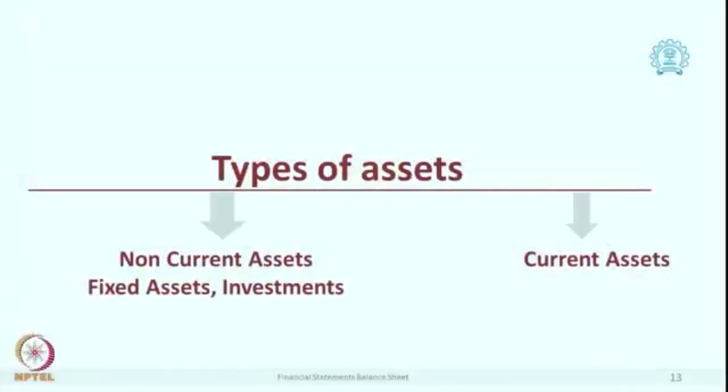Assets would not usually be made available to the company for free, so there will be some cost. We also assume there is an economic value which can be measured, and if the exact value is not known, at least it can be estimated. Coming to the types of assets, there are 2 major types: non-current and current. Non-current assets are those likely to last for more than one year, with major examples being fixed assets and current assets.